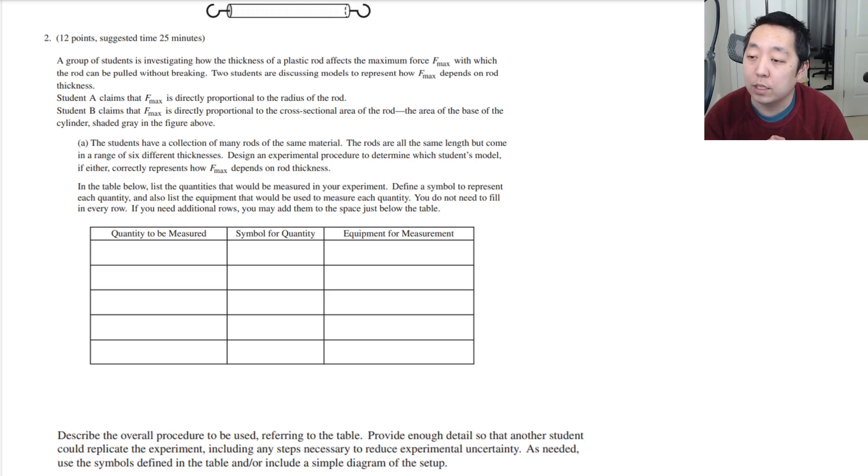Student A claims that F max is directly proportional to the radius of the rod. Student B claims that F max is directly proportional to the cross-sectional area of the rod, the area of the base of the cylinder shaded in gray in the figure above. The students have a collection of rods of the same material. The rods are the same length but come in a range of different thicknesses. Design an experimental procedure to determine which student's model correctly represents how F max depends on the rod's thickness.